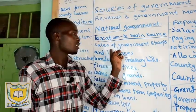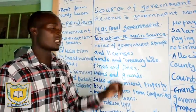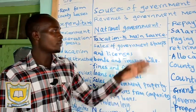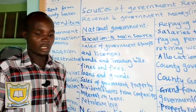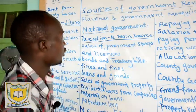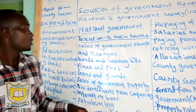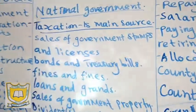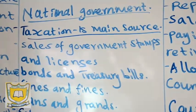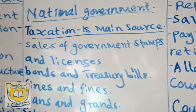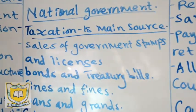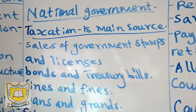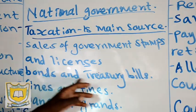Number two: sales of government stamps and licenses. We have government stamps for trading items and so on. Licenses are given to trading companies and people within the country. These are also a source of government revenue.